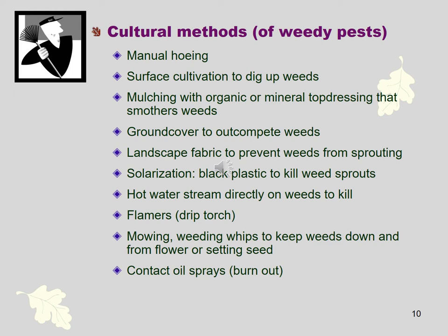Next are cultural control methods. Cultural control means you're physically going in and changing something in the garden — you're not attacking the pest directly, but changing something that deters the pest or breaks up its life cycle. Hoeing, or digging around your plants, deters the growth of weeds — that's a lot of what agriculture does when they till. Mulching also keeps weeds down. Ground cover, landscape fabric, solarization, hot water, a drip torch that flames oil onto weeds, mowing, and contact oil sprays like Burnout are all great cultural methods of weed control.